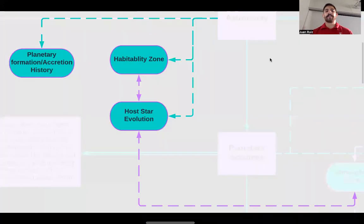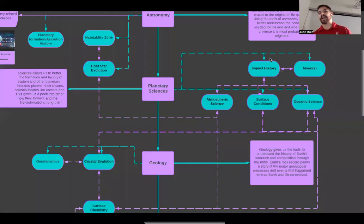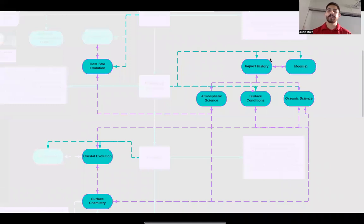And then I broke them down into subcategories, some deeper connections and how all of those relate to origins of life research. So here you see how astronomy breaks down and how all these fields in astronomy can relate to the fields of planetary sciences, so on and so forth.